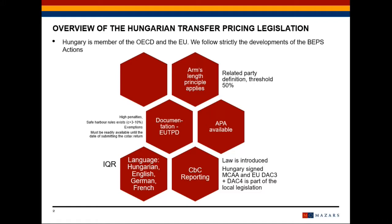Let me give you an example. If the main activity of the taxpayer is a commercial activity and the commercial activity is covered by an APA, no documentation must be prepared for that. However, if there is a management service charge from the group to the local entity, then there must be documentation available for that management transaction.